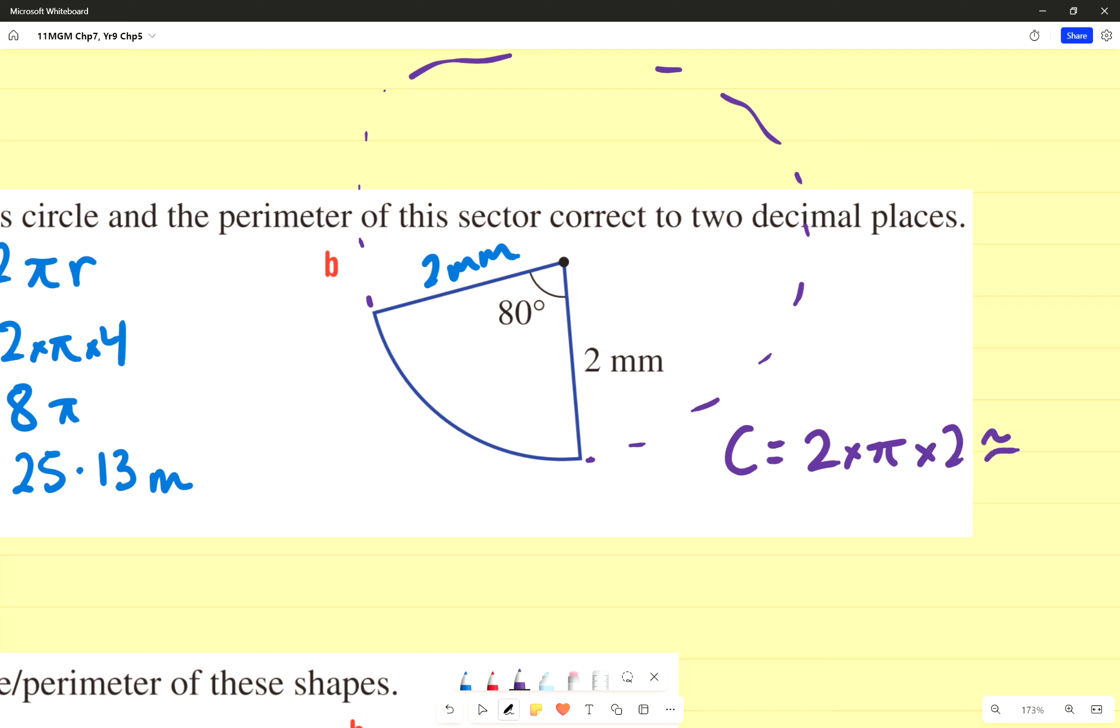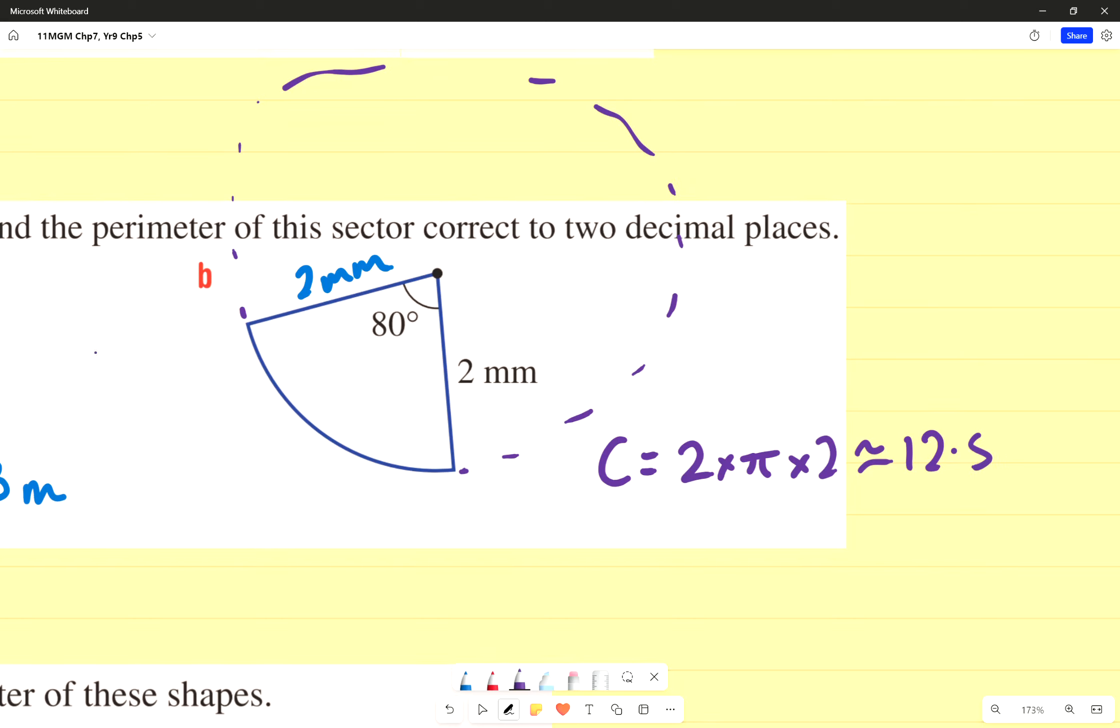So two, which is approximately, so I'm going to go 2 times π times 2 is 12.57. Approximately 12.57. Now, if the whole distance on the outside is 12.57, I'm going to figure out a way to only get 80% of that. Well, 80, sorry, not 80%, don't make that mistake. 80 degrees of that.